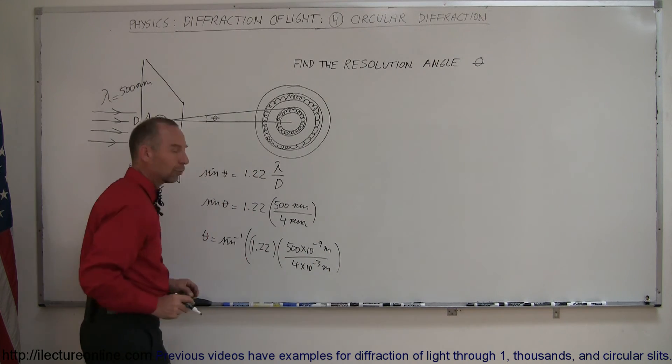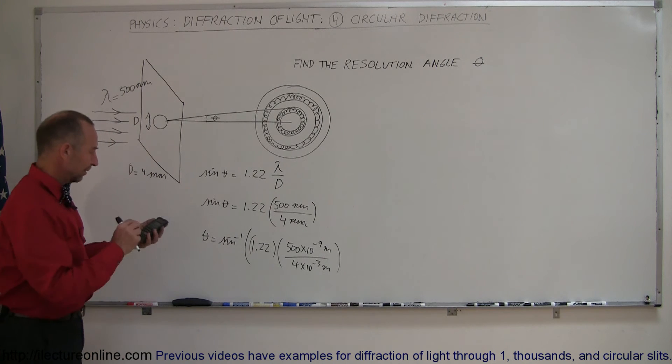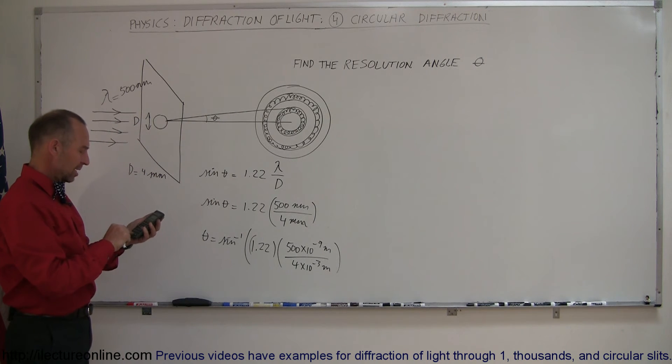We want to convert that to meters to have a common unit, and here's my calculator. We have 500 e to the minus 9 divided by 4 e to the minus 3.